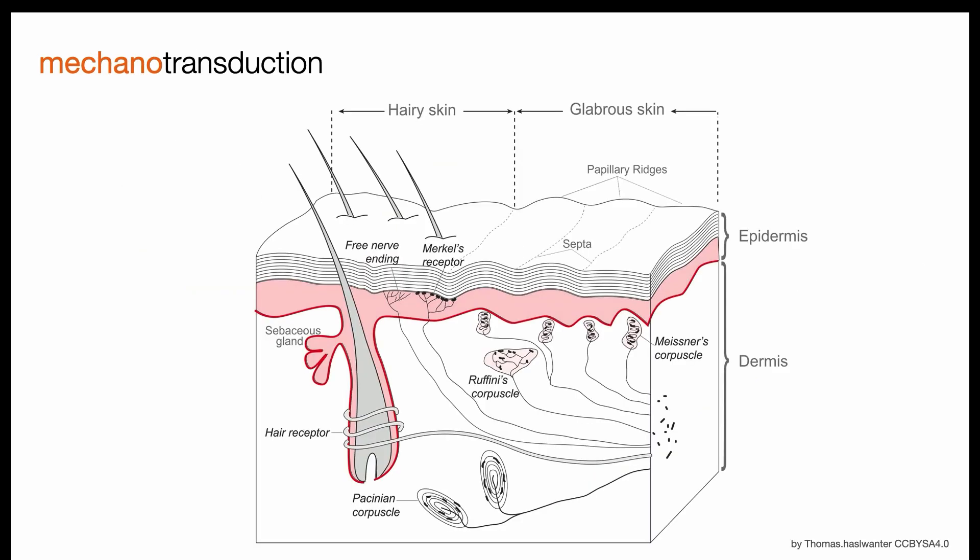Multiple senses make use of mechanotransduction, which is when mechanical forces are transformed into neural impulses, such as with some forms of touch. For example, the movement of hair on skin can trigger transduction, as can the displacement of skin, which activates receptors beneath the skin's surface.